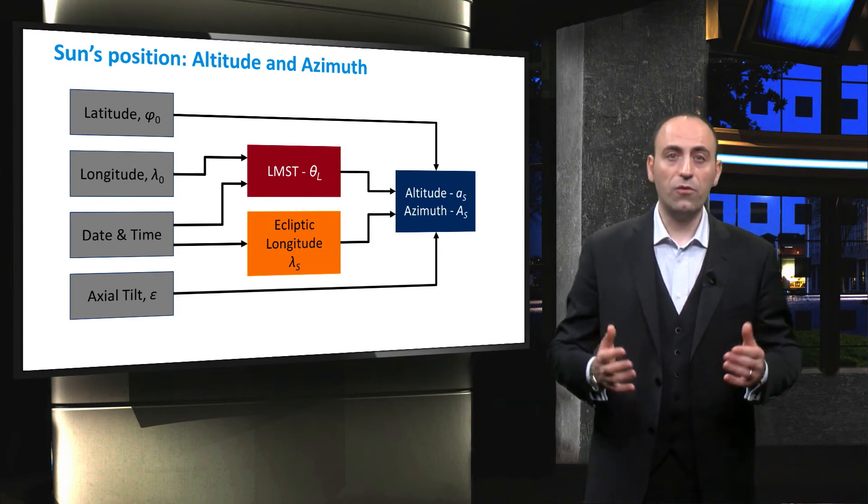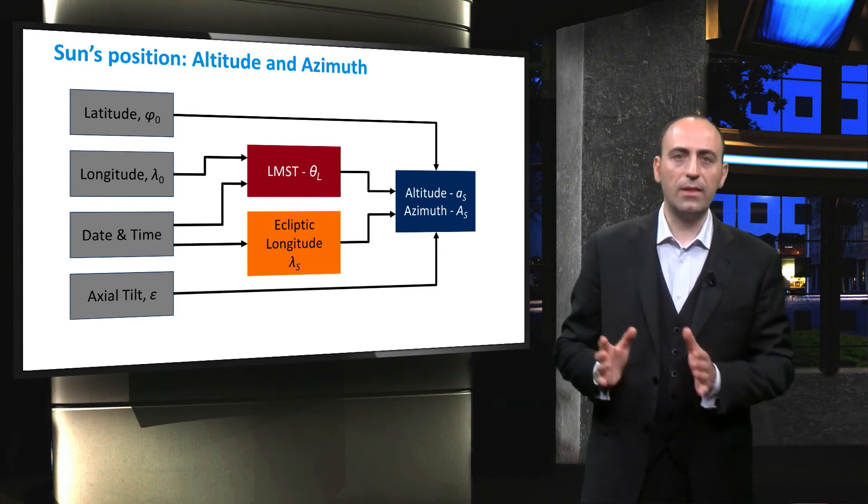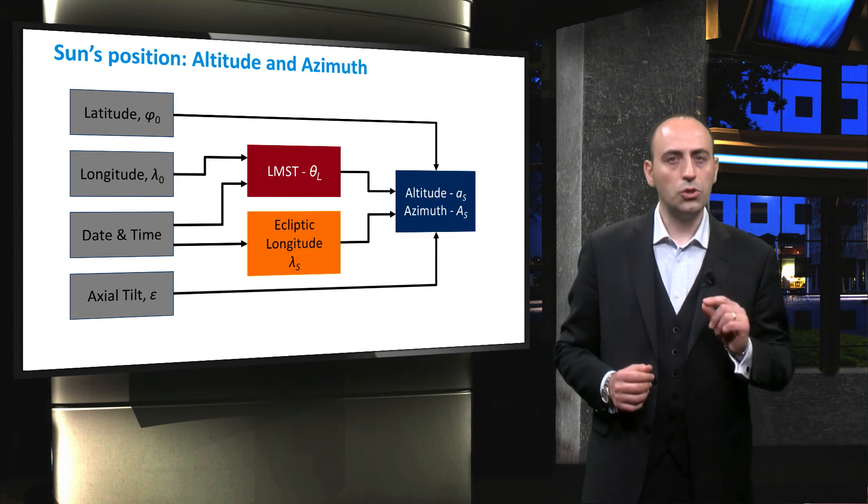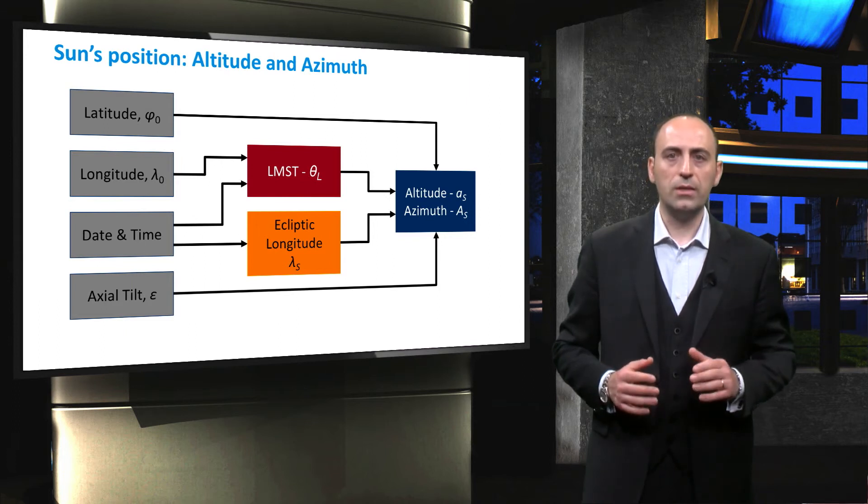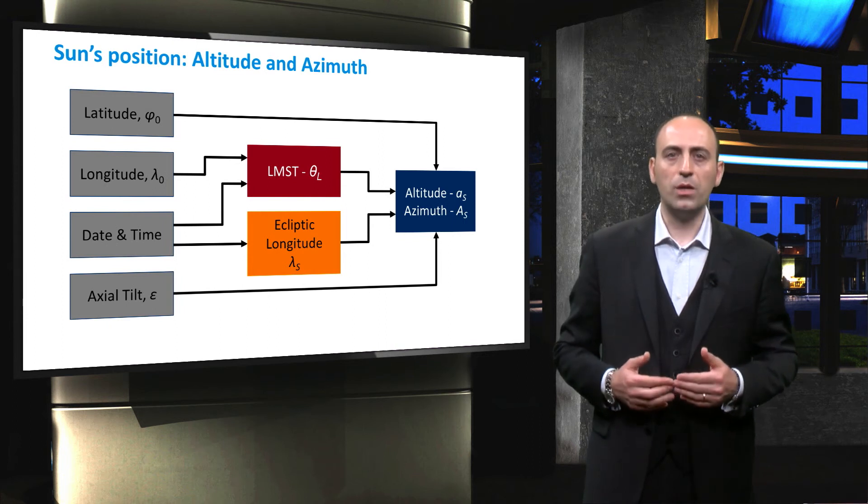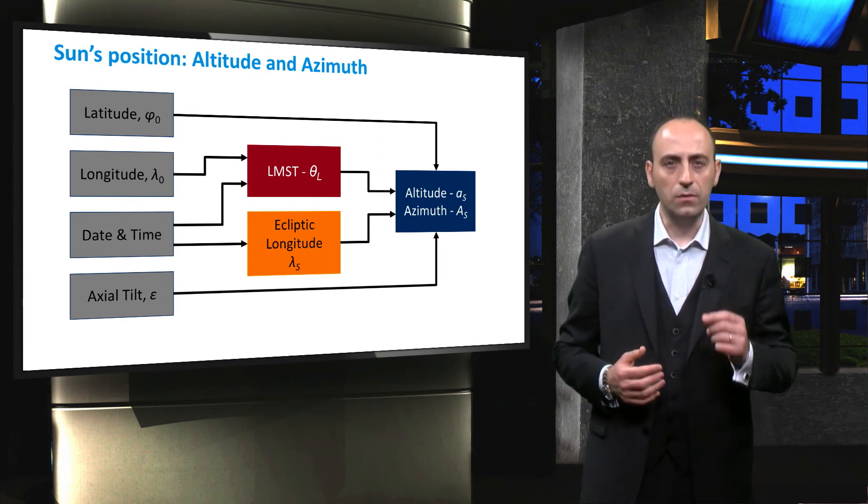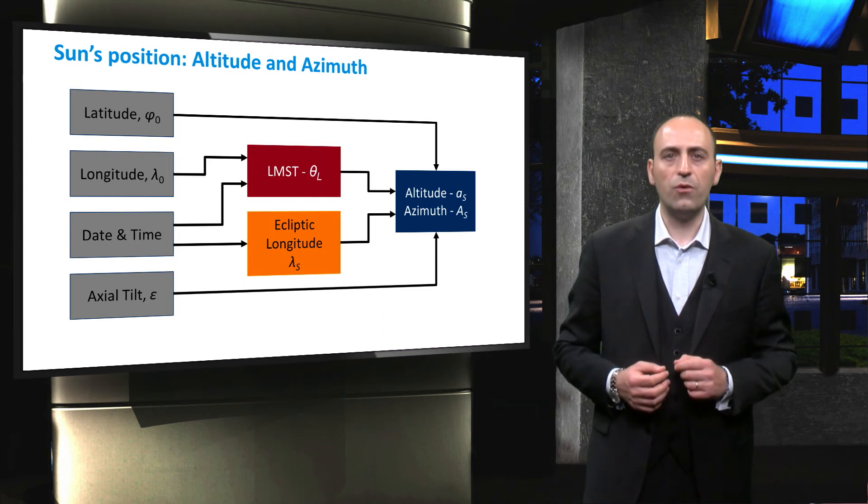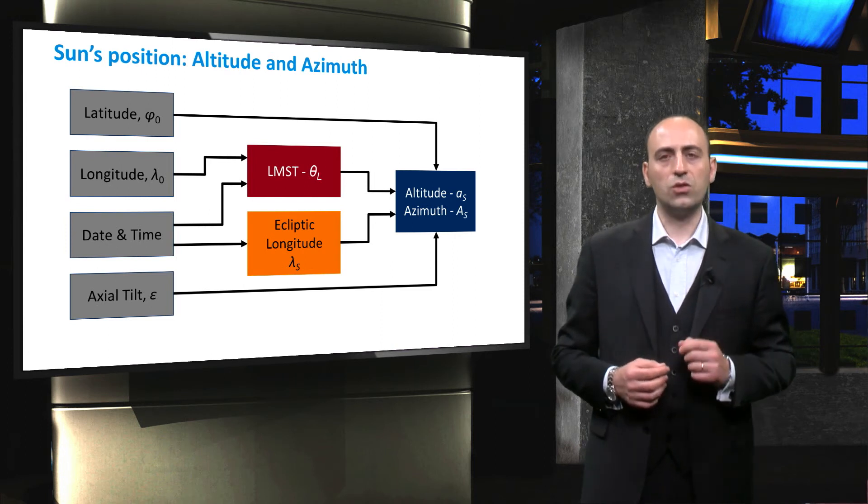Finally, we have all the information to compute the altitude and azimuth of the Sun. We will not show you the demonstration here, since it is beyond the scope of this lecture. However, if you want to take a deeper look at all the steps, please refer to appendix E of the solar energy book.